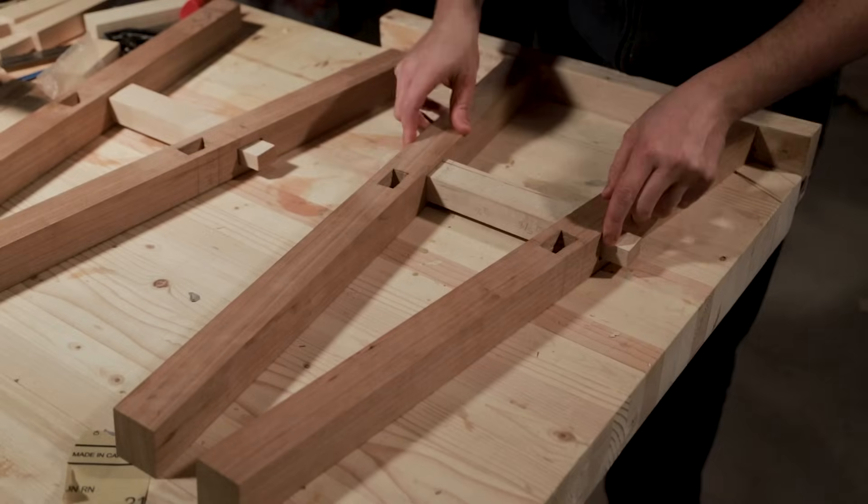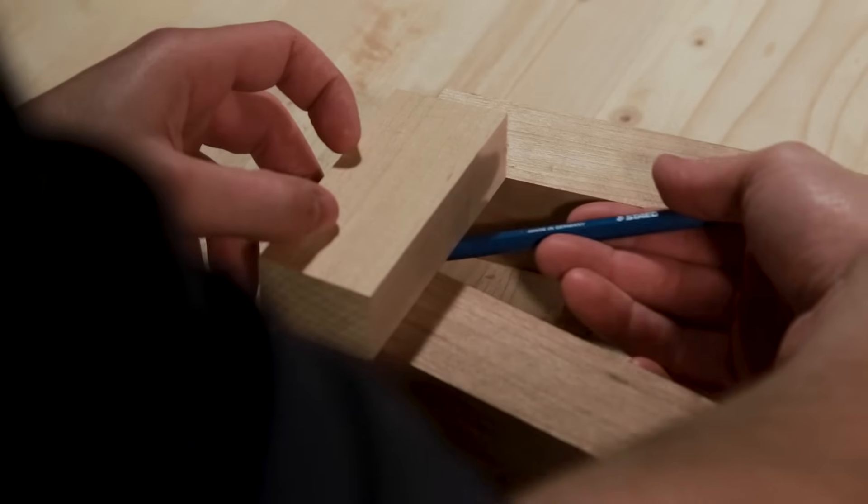Since these are through mortises and tenons, I made a tapered mortise so that when I put the tenon through and add the wedges it locks the rail in place. To connect the tops I decided to take an easier route and just use dowels and pocket holes since they won't be seen.